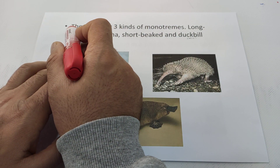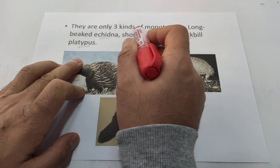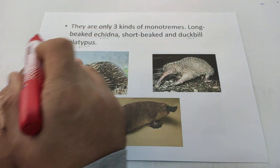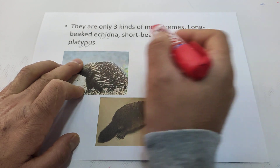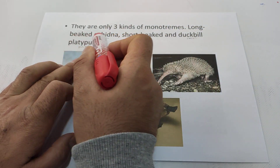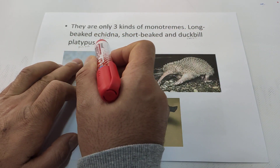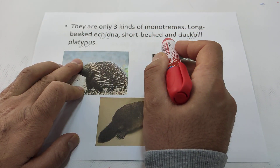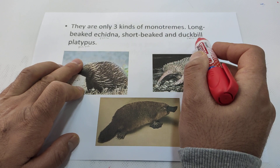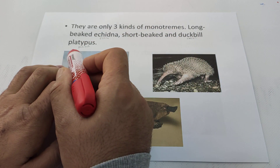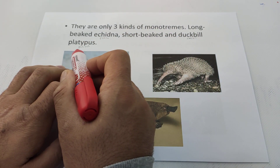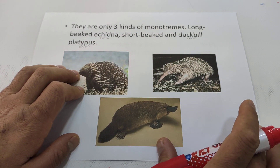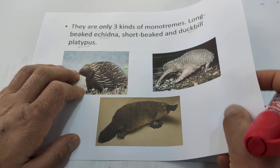There are only three kinds of monotremes: the long-beaked echidna, the short-beaked echidna, and the duck-billed platypus.